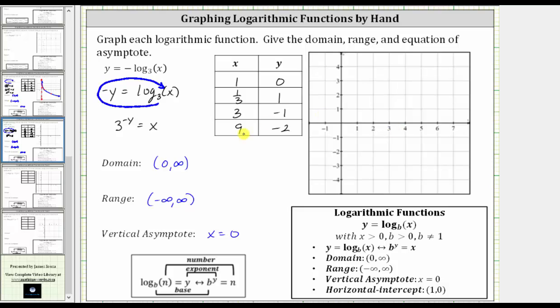Now looking at the coordinate plane, notice nine comma negative two would be off the screen on the right, and therefore this ordered pair will not help us make an accurate graph, but we do want a point here on the right side of the graph. So let's select a y value between negative one and negative two, let's say negative 1.5.